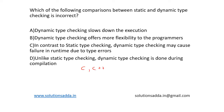Now, what is dynamic type checking? In dynamic type checking, it is the process of verifying the type safety of a program at runtime. PHP and Python are some common examples of dynamic type checking.